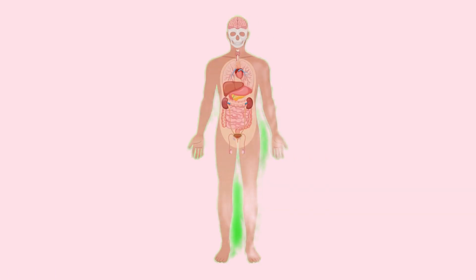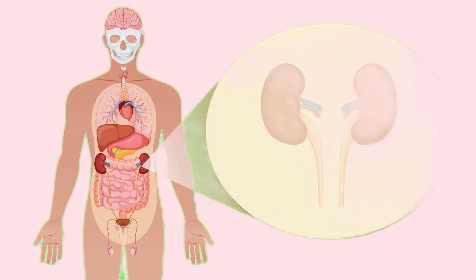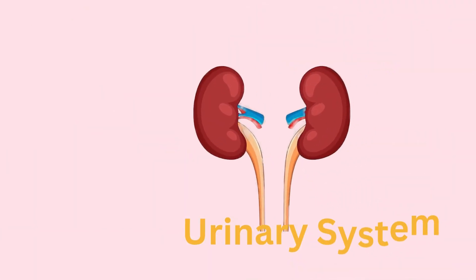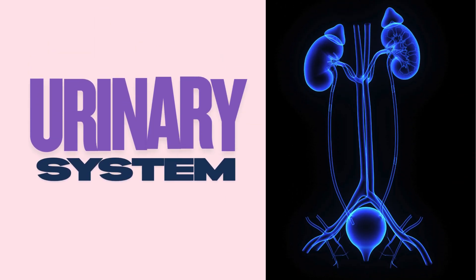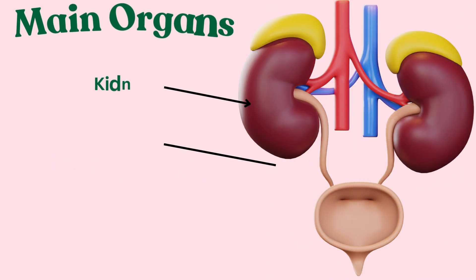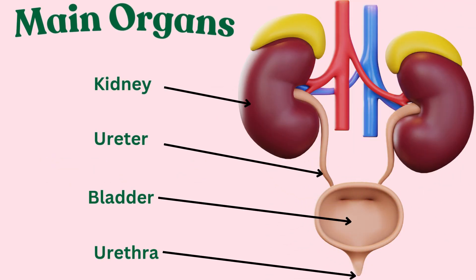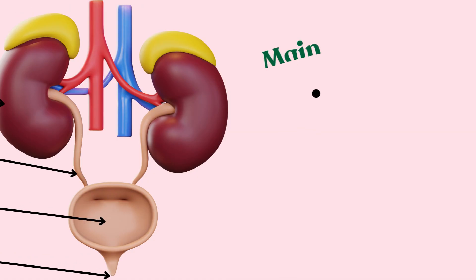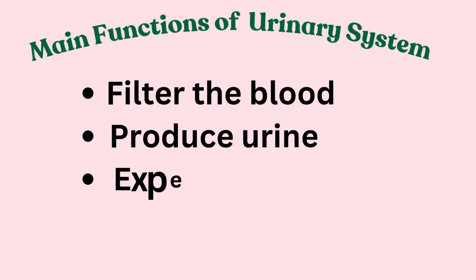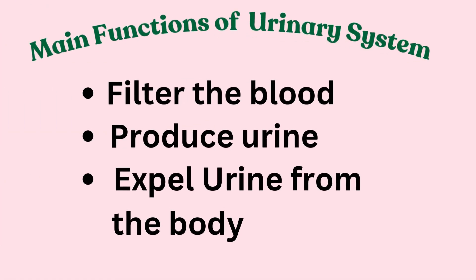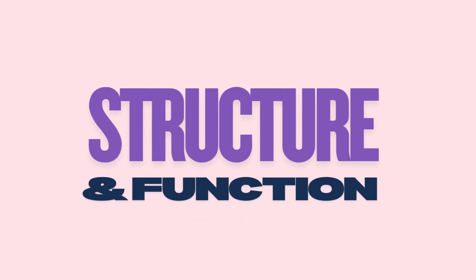These organs play supporting roles, but the star of the show is the urinary system. The urinary system includes four key organs: the kidneys, ureters, bladder, and urethra. Together, they filter your blood, produce urine, and expel it from the body. Let's discuss the structure and function of each part.